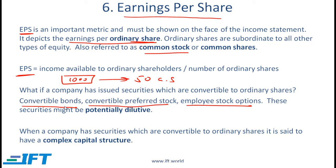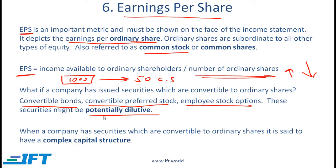With these convertible securities, there is a possibility that they will be converted, which would mean that the number of common shares will go up. In other words, the denominator would go up, and these convertible securities also have an impact on the numerator, which we will see over the next few slides. There is a chance that because of the increase in the denominator, the EPS is reduced or diluted. If this can happen, then we say that these securities are potentially dilutive. We say potentially dilutive because occasionally the impact of a particular convertible security might actually be anti-dilutive, which we will see later.